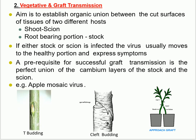Second is vegetative and graft transmission. The aim is to establish organic union between the cut surfaces of tissues of two different hosts — the scion and the rootstock. If either the rootstock or scion is infected, the virus usually moves to the healthy portion and expresses symptoms. A prerequisite for successful graft transmission is the perfect union of the cambium layer of the rootstock and the scion. For example, apple mosaic virus.